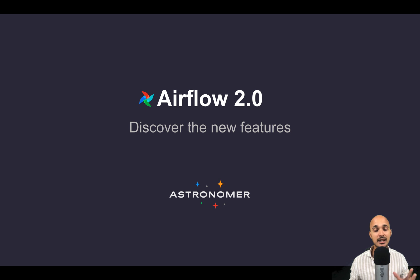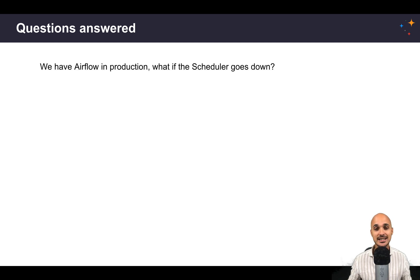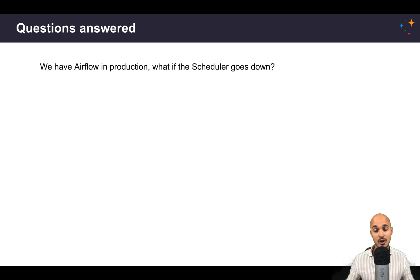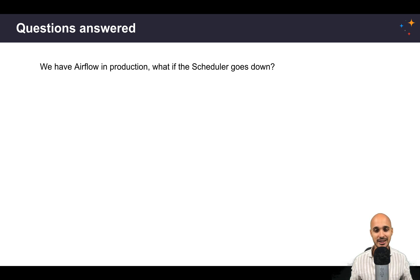But before getting started, let me show you the questions we are going to answer together. The first and most important question you might have is: what happens if the scheduler goes down? If you are running Airflow in production, you know that the single point of failure of your architecture is the scheduler. If the scheduler goes down, you won't be able to trigger any more tasks. Well, in Airflow 2.0, this has been solved — and not only that.